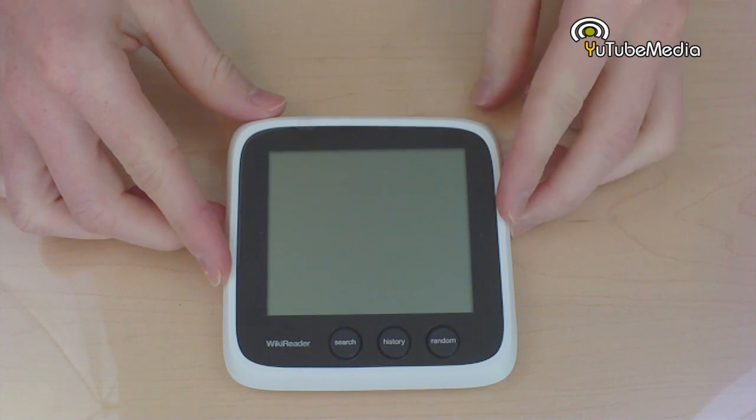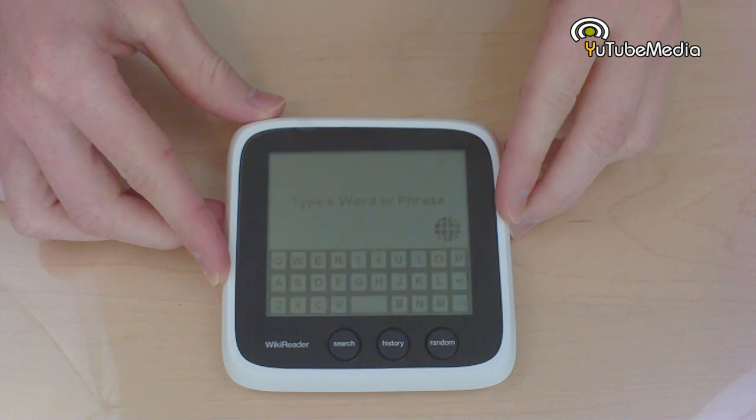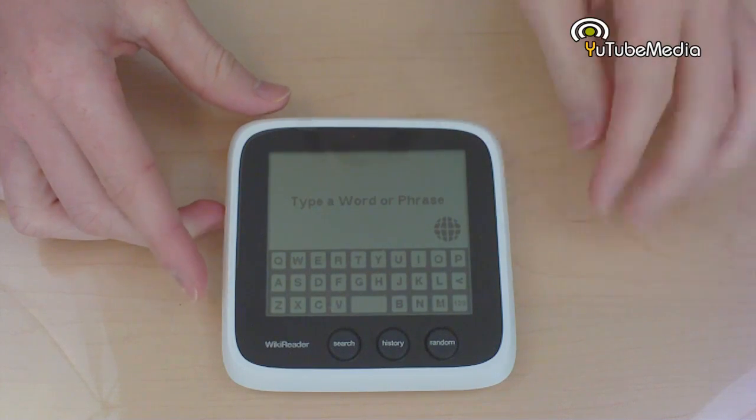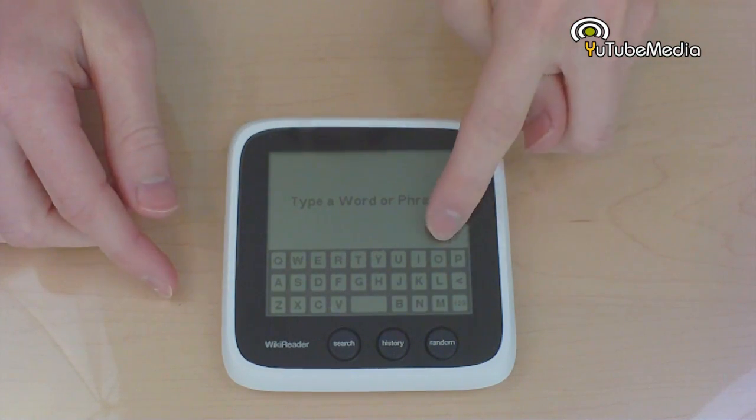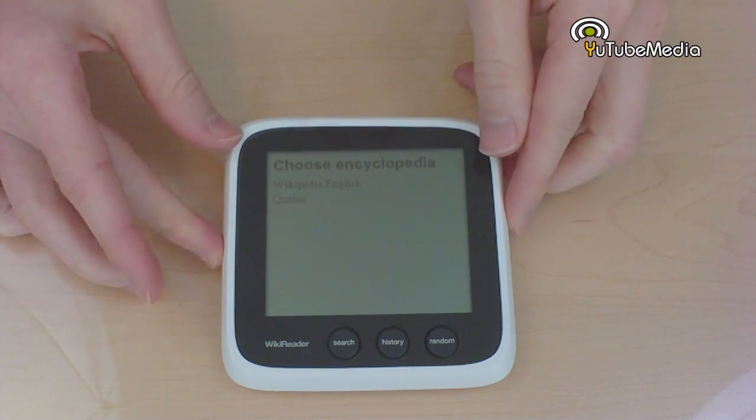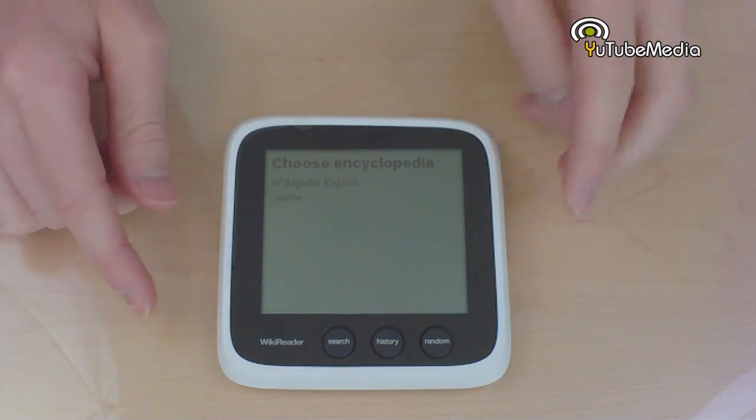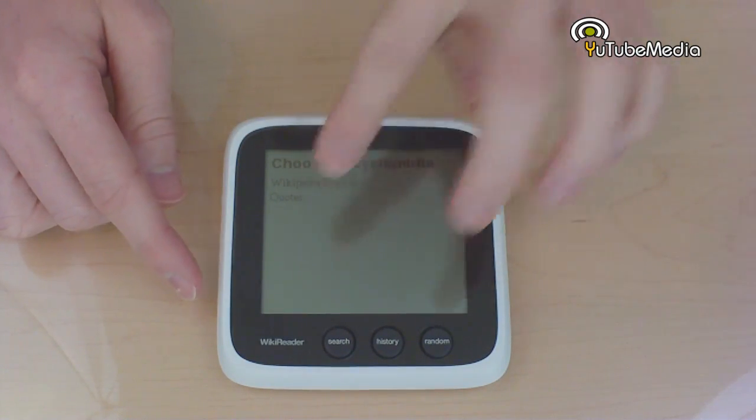Now that I have the batteries installed, we're just going to press the power button on the right here. Just hold it down, instantly turns on. And there we go. When you turn it on, depending on the model you have, you can press this globe icon and choose your languages. This particular model only has English right now, but it comes in 15 different languages. Let's just go ahead and go back to Wikipedia English.